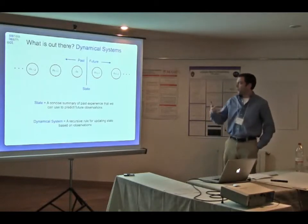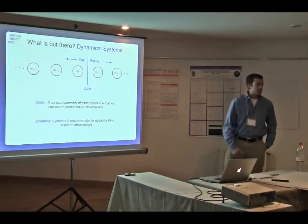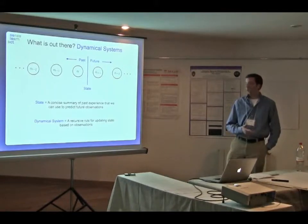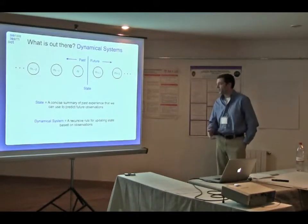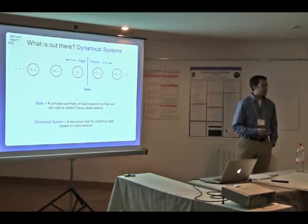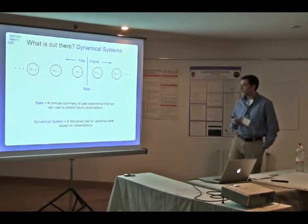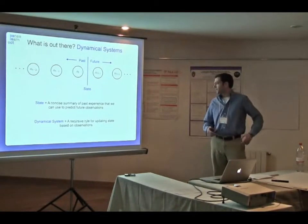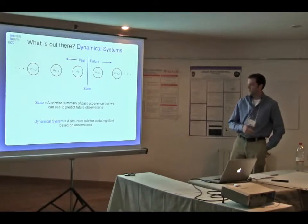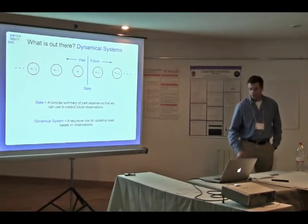A reasonable model representation for this is a dynamical system, which consists of two parts. There's a state space, where state is just a concise summary of past experience that we can use to predict future observations, and there's the actual dynamics of the model, which is a recursive rule for updating state given a new observation.